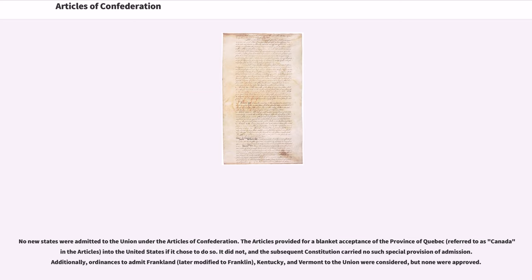The Articles provided for a blanket acceptance of the province of Quebec, referred to as Canada in the Articles, into the United States if it chose to do so. It did not, and the subsequent Constitution carried no such special provision of admission. Additionally, ordinances to admit Franklin, Kentucky, and Vermont to the Union were considered, but none were approved.